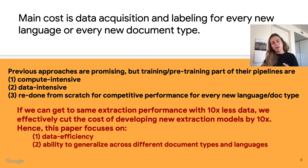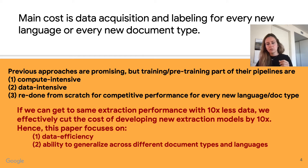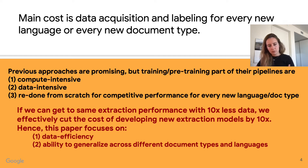Although previously proposed approaches are very promising, training or pretraining time of their pipelines are not only compute and data intensive, but also need to be redone from scratch whenever working with a new, considerably structurally different document type or language. In order to fully automate this task, we need to tackle hundreds of document types, and the main cost is data acquisition and labeling. If we can achieve the same extraction performance with 10x less data, we're effectively cutting the cost of developing new extraction models by 10x.